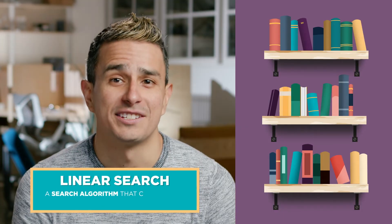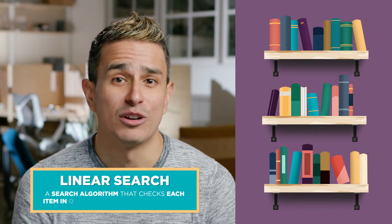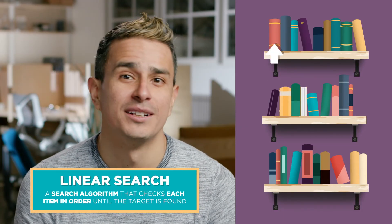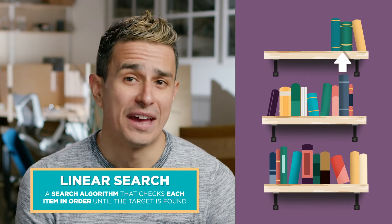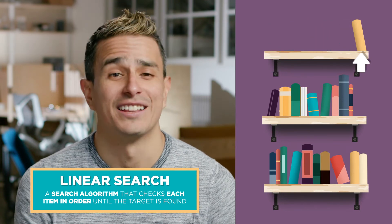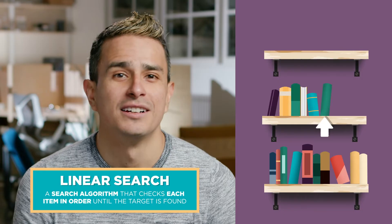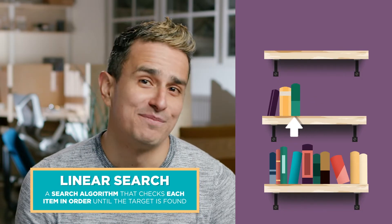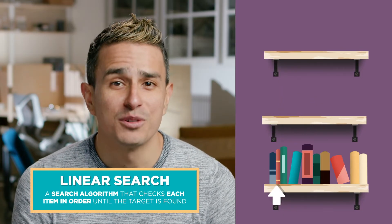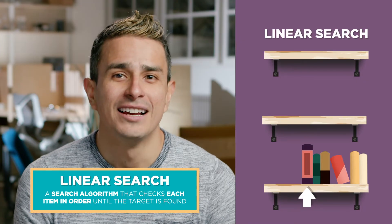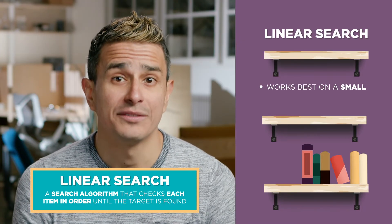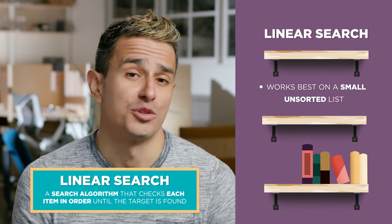We could try doing a linear search. A linear search is a search algorithm that checks each item in order until the target is found. So we could start by checking the first book, then the second book, and so on. This could work, but it'll take a while. We might have to check all the books on the shelf to find what we're looking for. A linear search works best for a relatively small unsorted list.